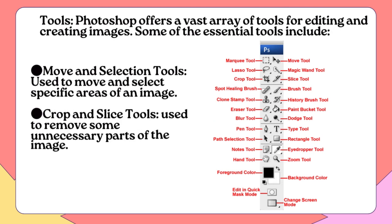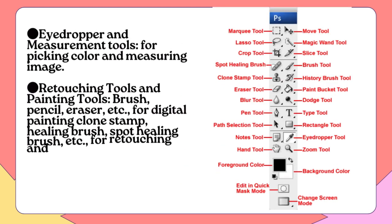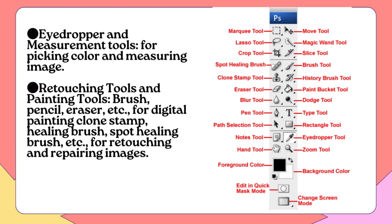Photoshop offers a vast array of tools for editing and creating images. Some essential tools include: Move and Selection Tools — used to move and select specific areas of an image. Crop and Slice Tools — used to remove unnecessary parts of the image. Eyedropper and Measurement Tools — for picking color and measuring an image. Painting Tools such as Brush, Pencil, and Eraser for digital painting. Retouching Tools such as Clone Stamp, Healing Brush, and Spot Healing Brush for retouching and repairing images.